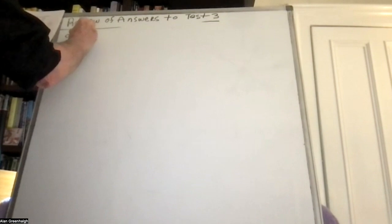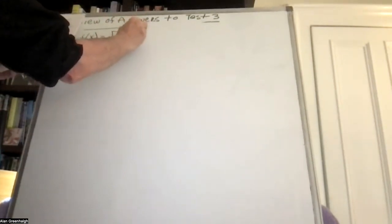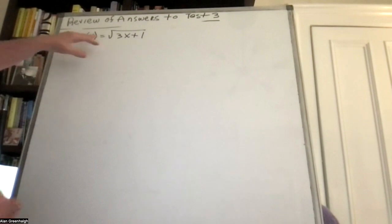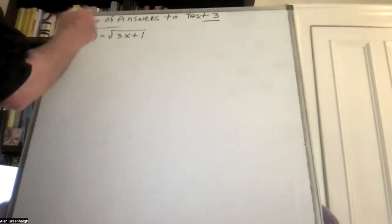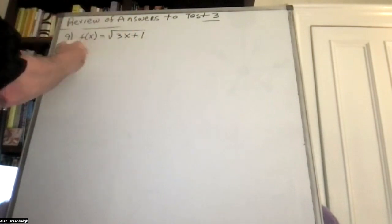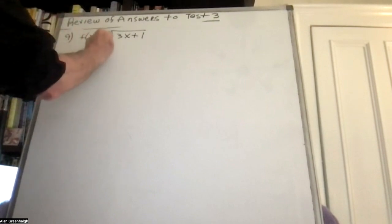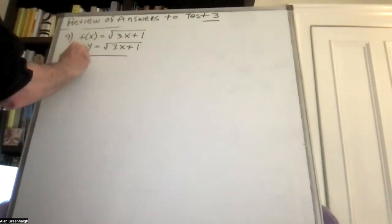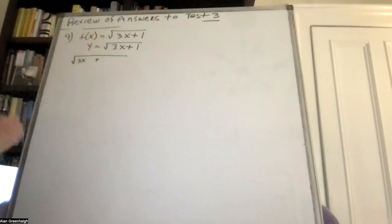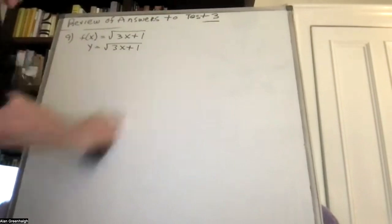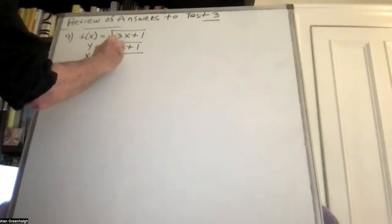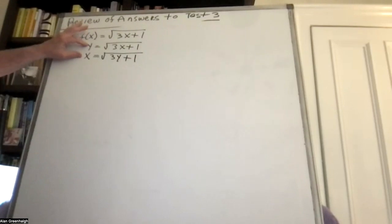Problem number 9 asks us to find the inverse of the function. There are two parts: find the inverse, and then verify. Let y equal f(x), then switch x and y — so x equals the square root of 3y plus 1. Switching x and y is a very important step. Now square both sides: 3y plus 1 equals x squared.